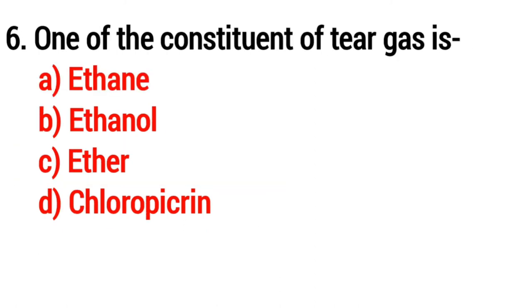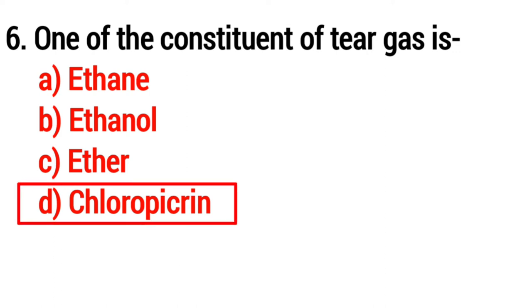Question number 6. One of the constituents of tear gas is? The answer is Option D, Chloropicrin.